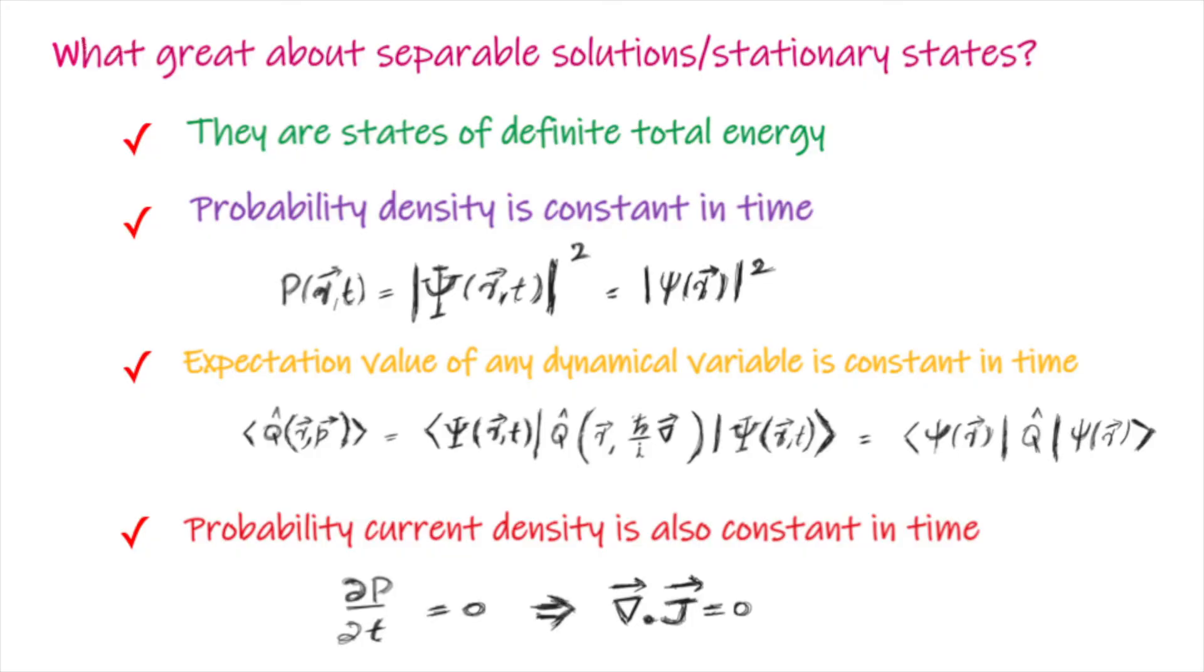Now, let me explain what is so great about stationary states or separable solutions of Schrödinger equation. First one is, each stationary state has a precise value of energy. That is, every measurement of total energy on a stationary state will return a definite value of energy.